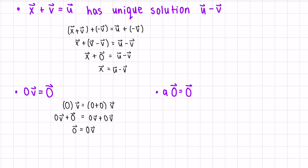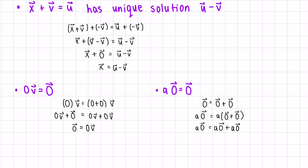A similar idea shows that a scalar times the zero vector is the zero vector. The zero vector equals zero vector plus zero vector, since the zero vector does nothing. Multiplying everything by scalar a: a times the zero vector equals a times (zero vector plus zero vector). By distributivity of scalar multiplication, that gives a·0⃗ = a·0⃗ + a·0⃗. By the cancellation law, we conclude the zero vector equals a times the zero vector.